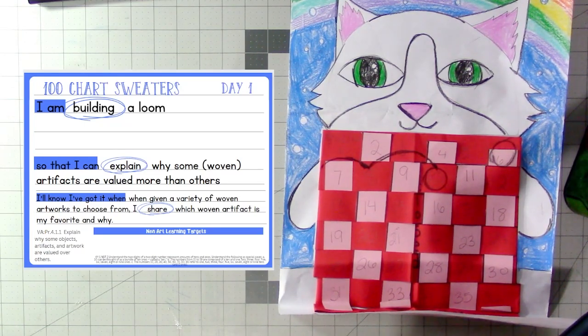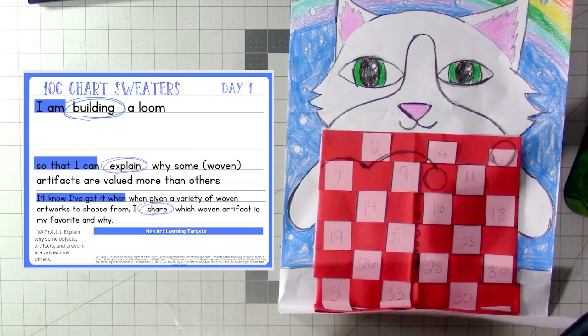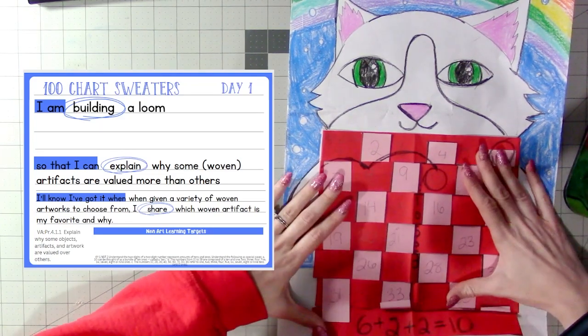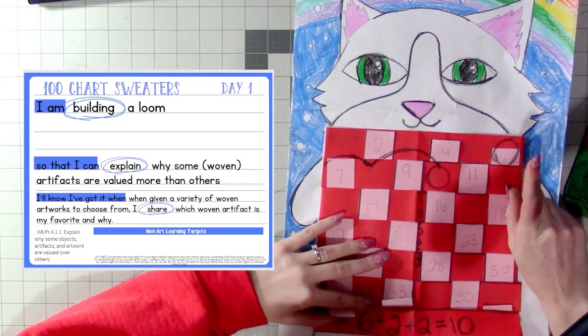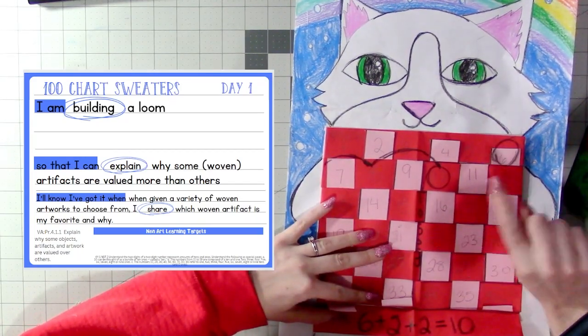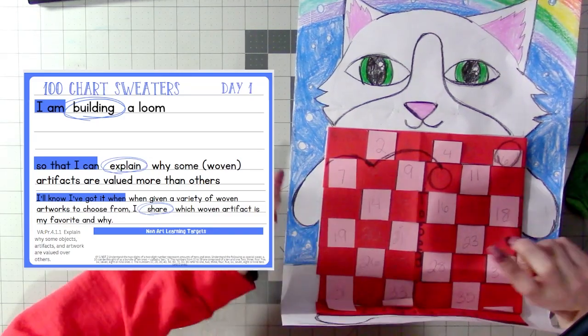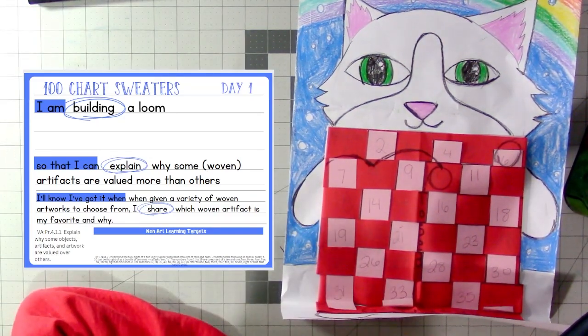And before we get started, we're going to pause it here and we're going to watch a little video that teaches us our art vocabulary, which is loom, which is what we're going to make today, warp, weft, and weaving, which is what we'll start on another day. So we're going to pause the video here and watch that vocabulary video.